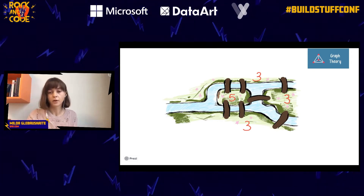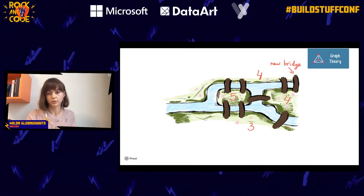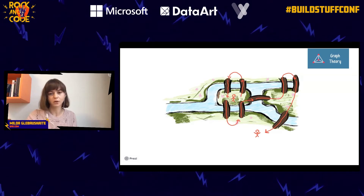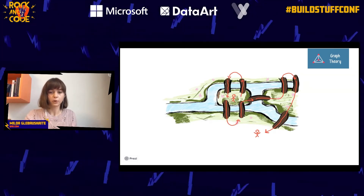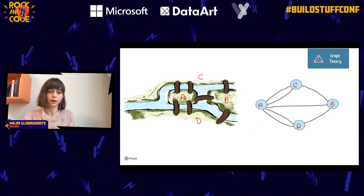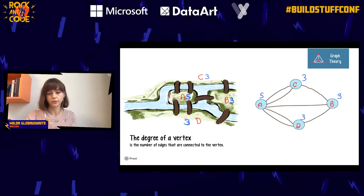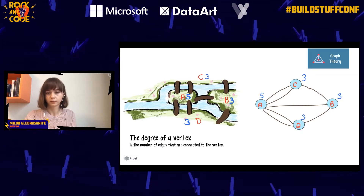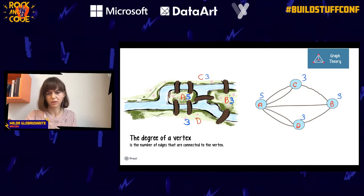He quickly realized that if you cross a land through one bridge, you can leave through another, but if you cross through a third bridge you cannot leave anymore. So if you add a new bridge, you can quickly solve this riddle. He represented this problem as what we now know as a graph, and the number of bridges connected to each land is what we now know as the degree.